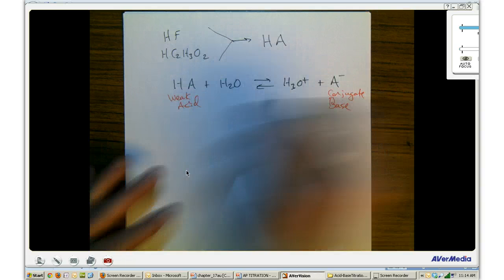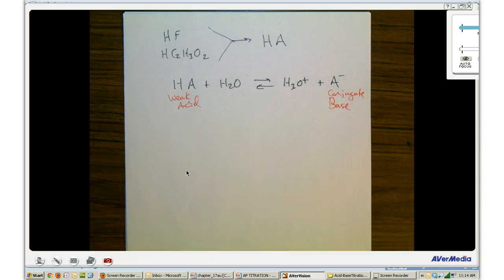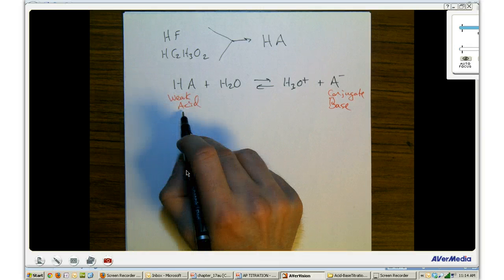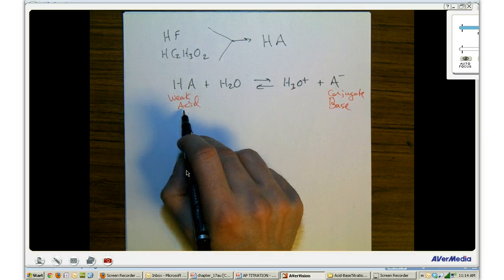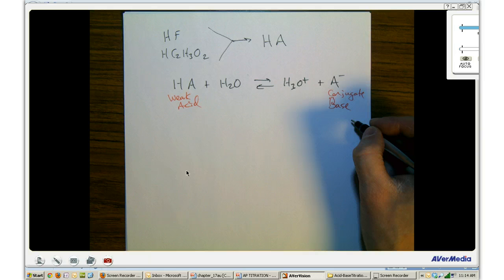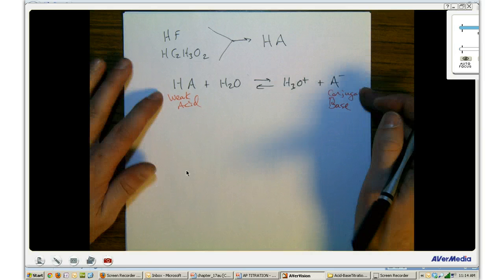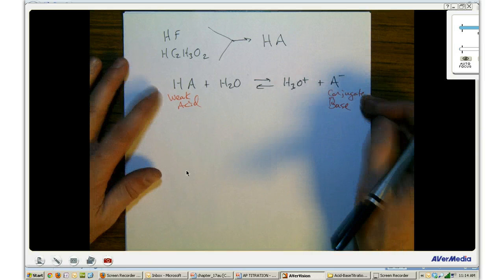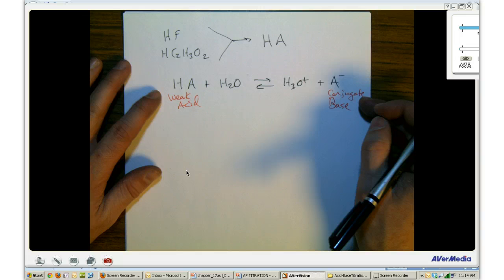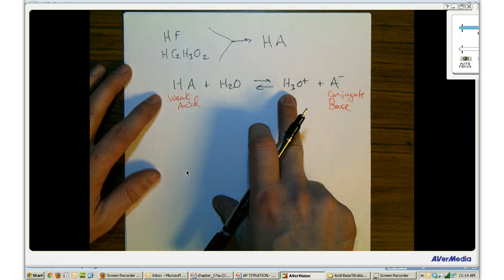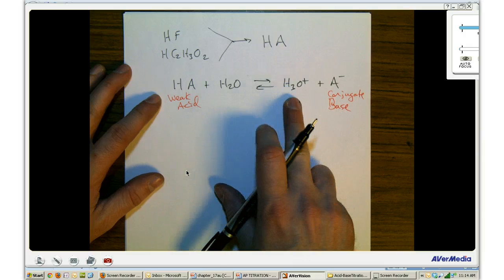We often refer to A- just as the base when we talk about buffers. Buffers are created when you have an initial amount of your weak acid and an initial amount of your conjugate base, which allows this equilibrium to react with anything acidic or basic and relatively maintain the concentration of hydronium in your solution, thus maintaining the pH.